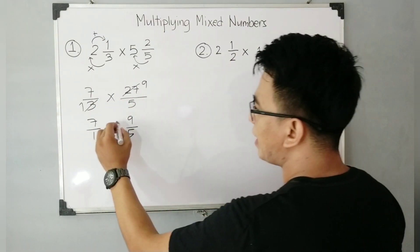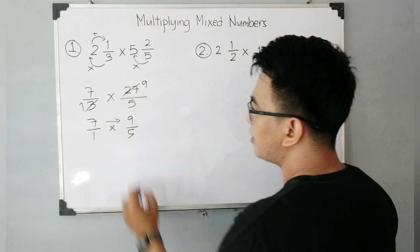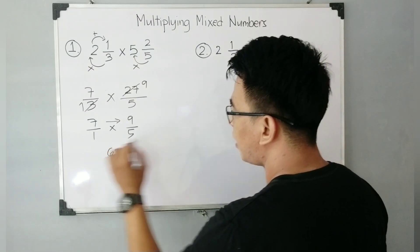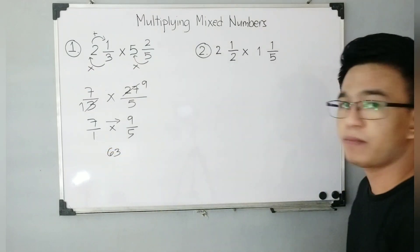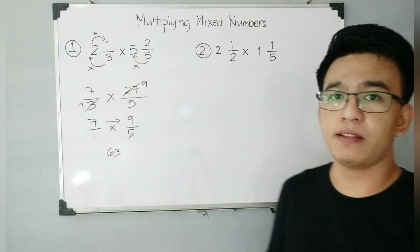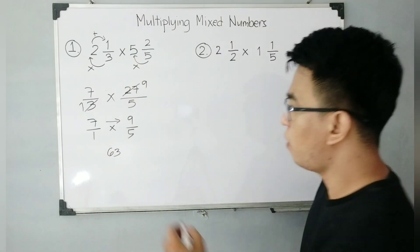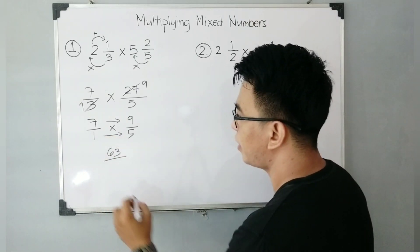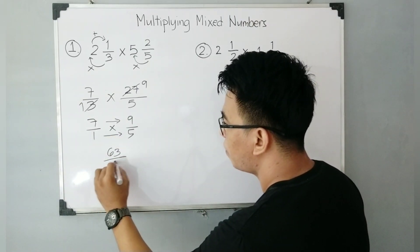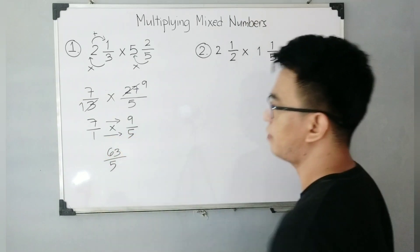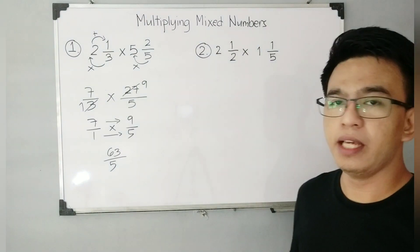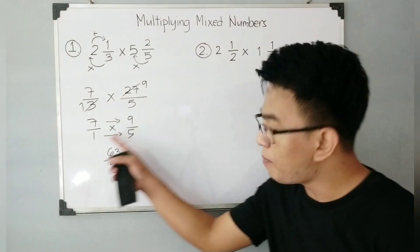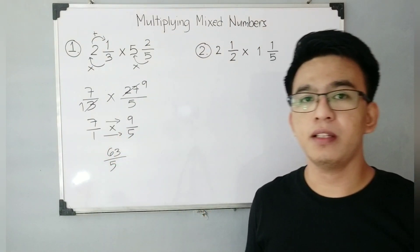So let's multiply. 7 times 9 gives you 63. Over 5 times 1, that gives you 5. So we get 63 over 5. And of course, this is an improper fraction.